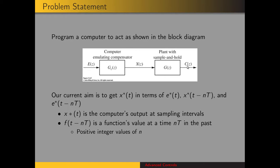What we want to get now is an expression for x-star of t, which is the sampled-time output of the compensator. We want this in terms of the error and in terms of previous values of the input — e-star of t, which is the current sampled value, and x-star of t minus nT, where n is some positive integer. So we want past values of the compensator output and also past values of the error, in order to get the current output of the compensator.